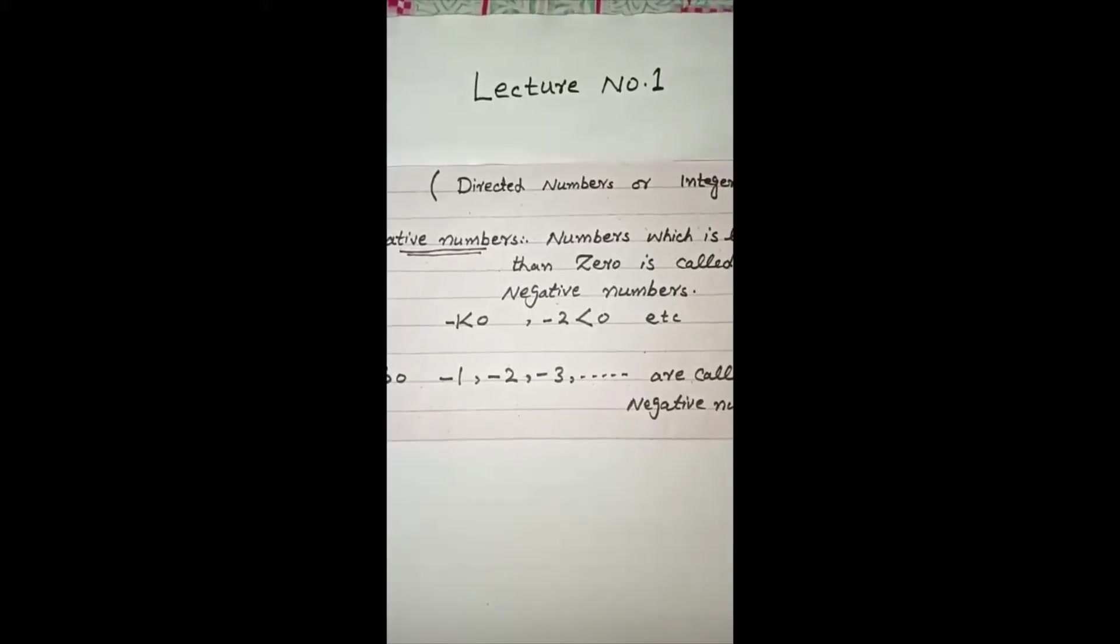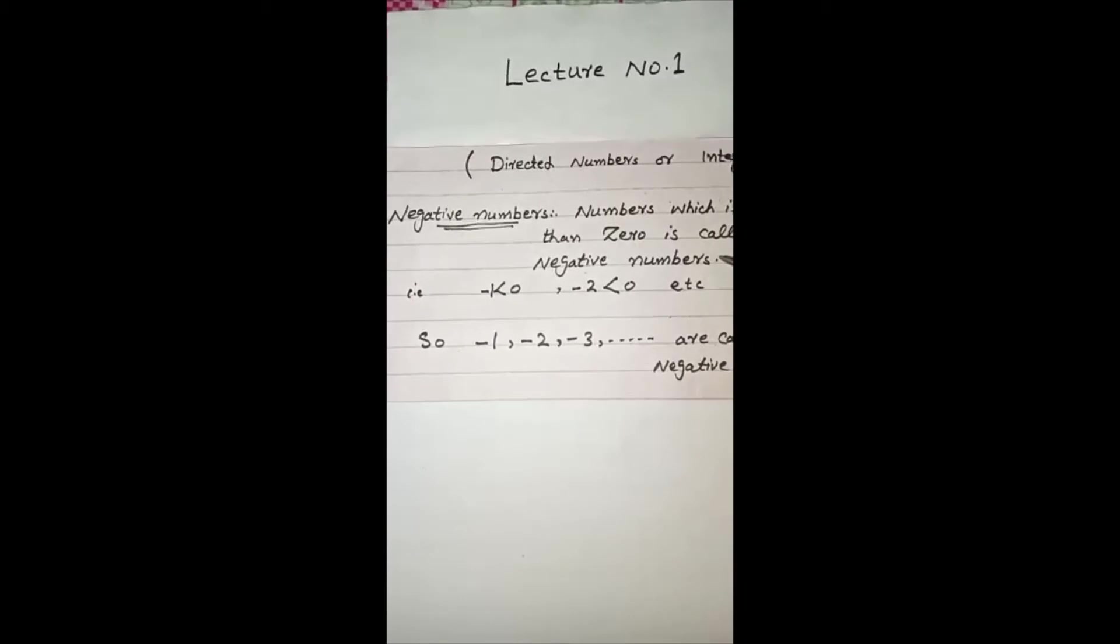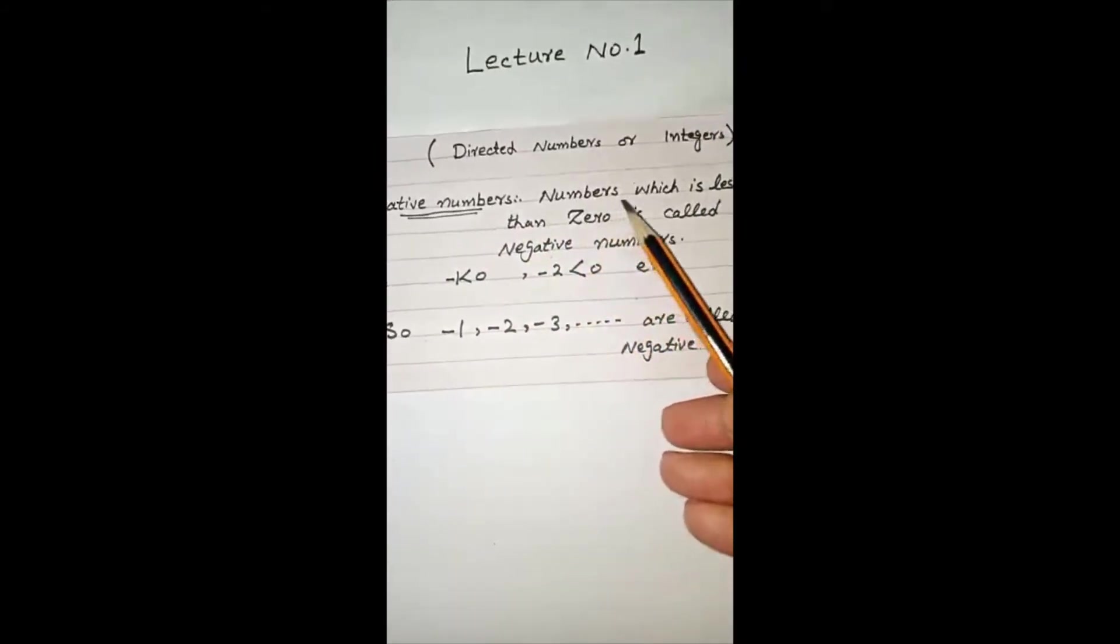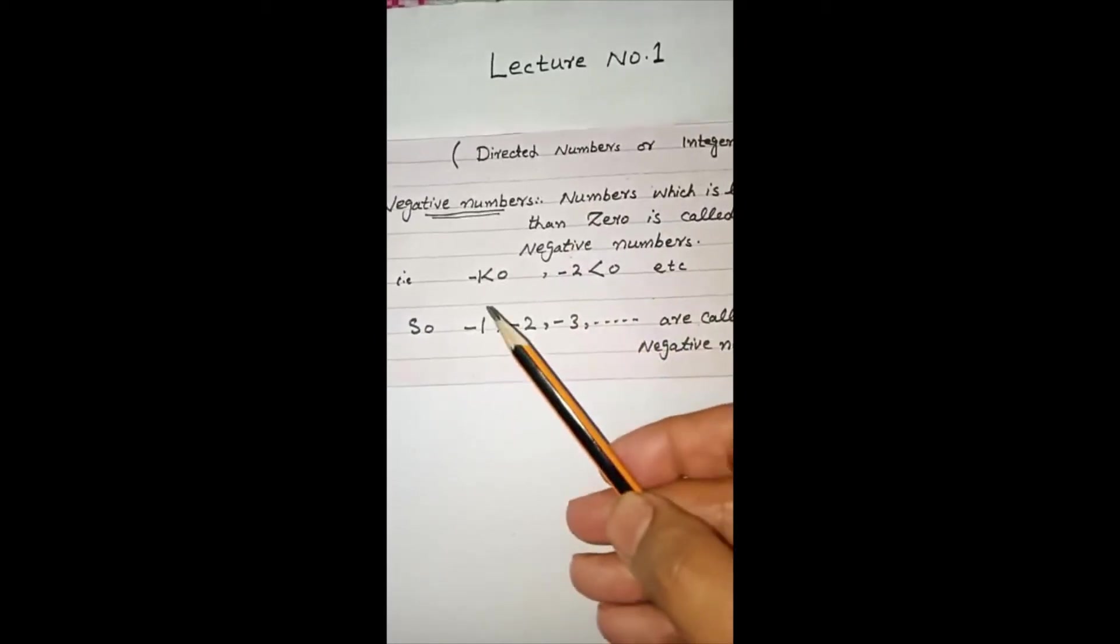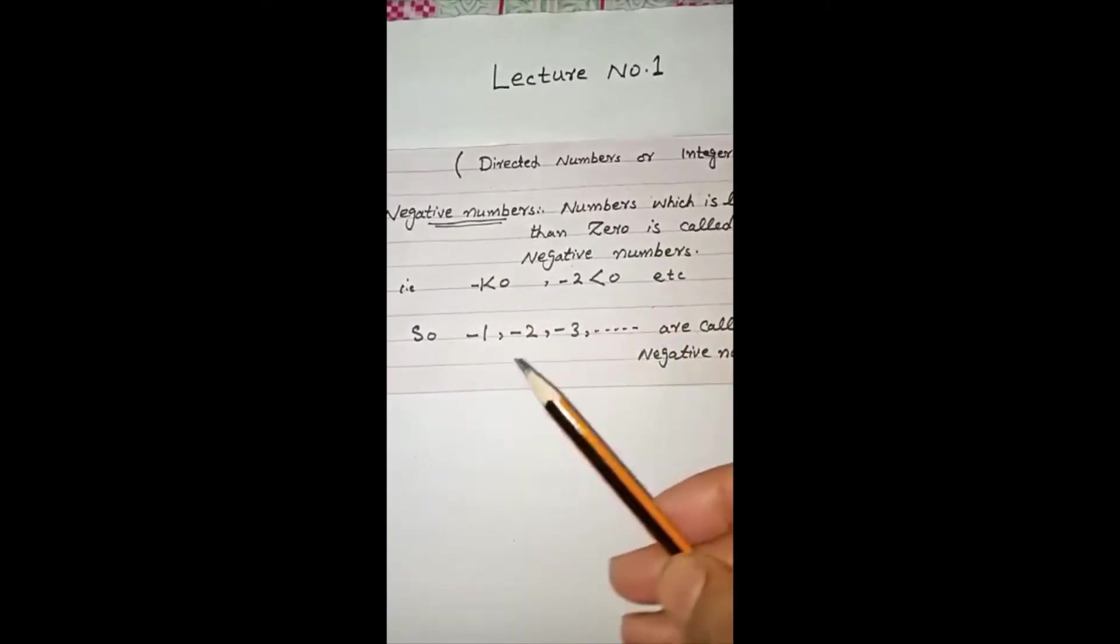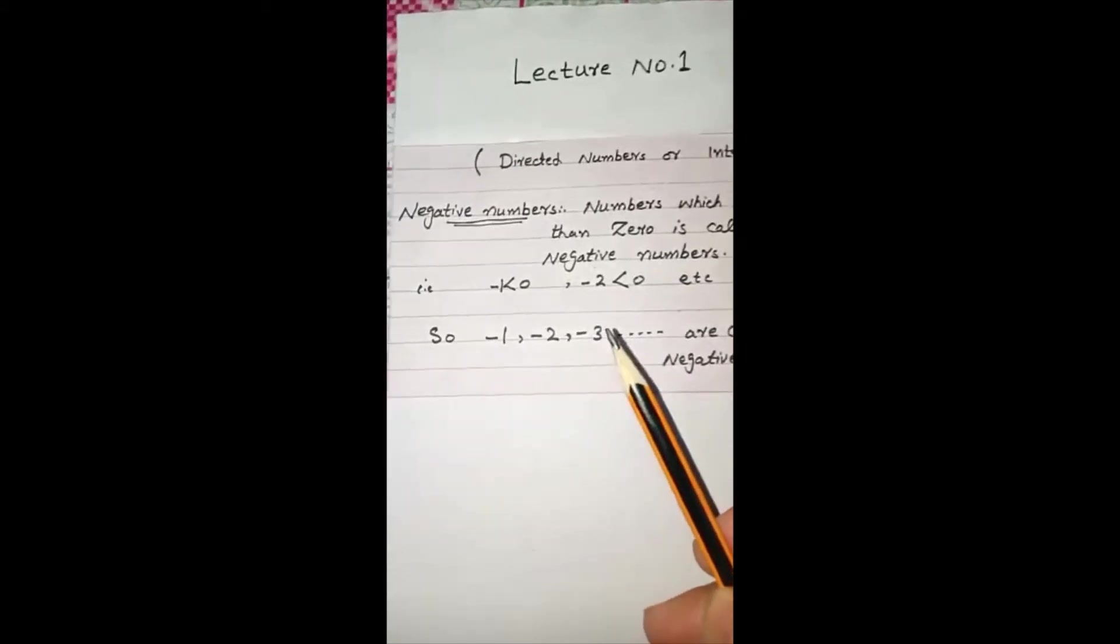Assalamu alaikum. Today our topic is directed numbers or integers, but first we define negative numbers and whole numbers because these numbers are related to directed numbers. Negative numbers: numbers which are less than zero are called negative numbers. Minus 1 is less than 0, minus 2 is less than 0, etc. So minus 1, minus 2, minus 3, minus 4 and so on are called negative numbers.